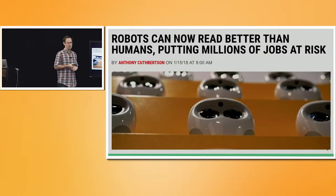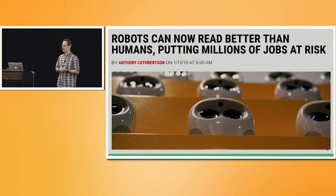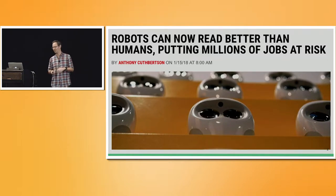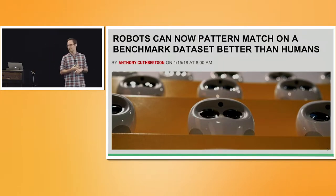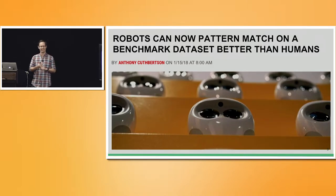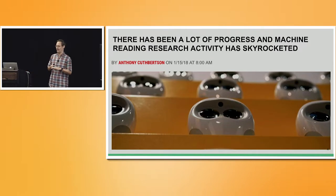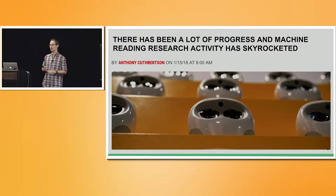Some of you might have seen these news a couple of months ago on robots that can now read better than humans, putting millions of jobs at risk. That alone should be a good reason to talk about machine reading here. In reality, the way these news should really sound like is: robots can now pattern match on a benchmarked data set better than humans. We're not yet there — machines are not reading like humans in any way. But nevertheless, there has been a lot of progress in the last couple of years on what is called machine reading, and activity in this space has really skyrocketed.